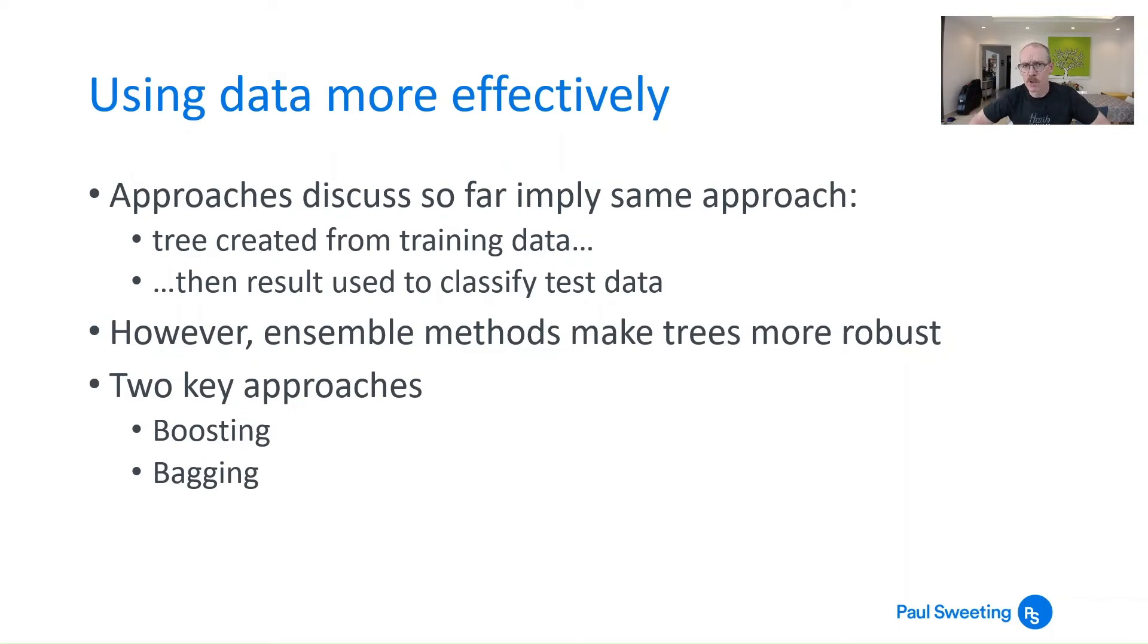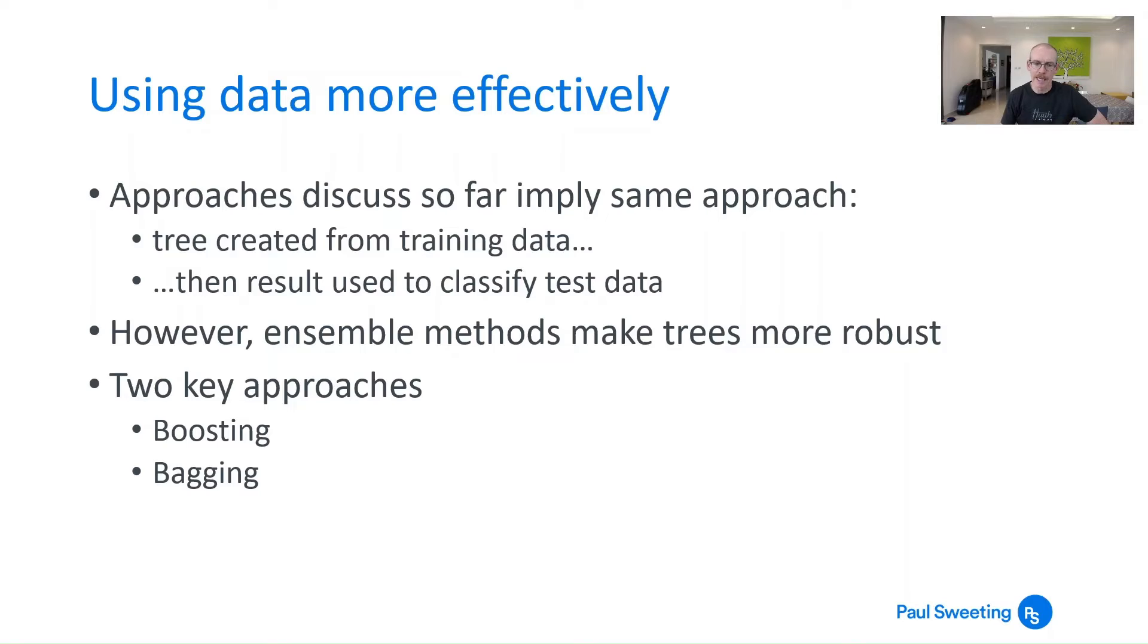So that's it for decision trees broadly. It's also worth talking about how we can make these trees more robust, and not just these trees but also any kind of classification approach. And there's two key approaches I want to look at. And these are boosting and bagging. So boosting is based on the idea of having weak and strong learners which means the correlation with the true classification. So a learner is a classifier such as a decision tree.